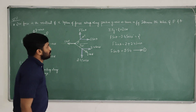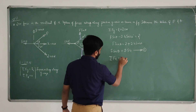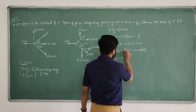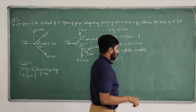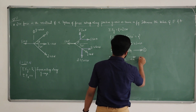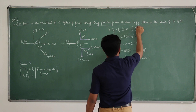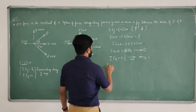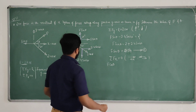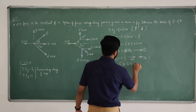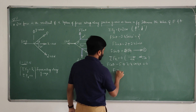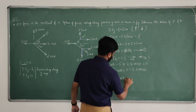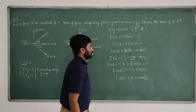Now apply the second condition: sigma Fx equals 0. Summing all horizontal forces equals 0. The sign convention is right side positive and left side negative. So F cos theta minus 5 plus 2.4 cos40 equals 0, giving F cos theta equals 5 minus 2.4 cos40, which equals 3.16. This is equation number 2.